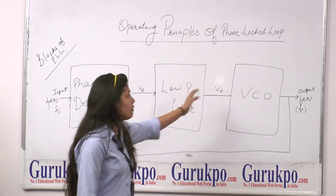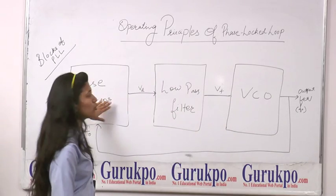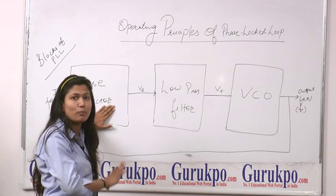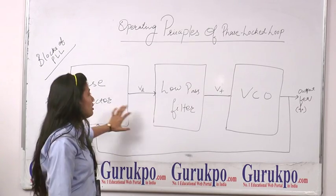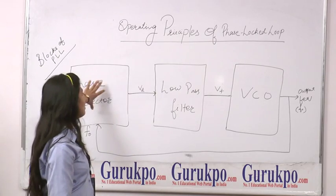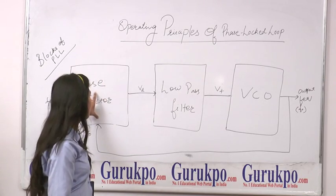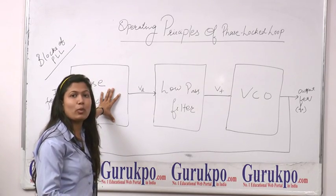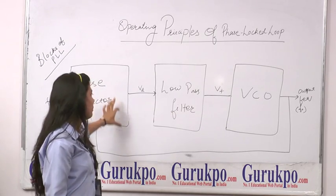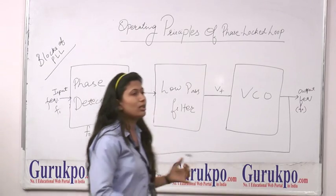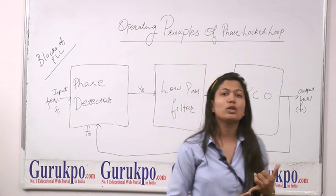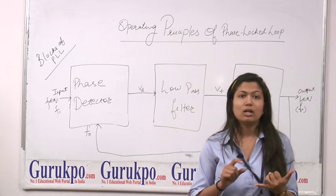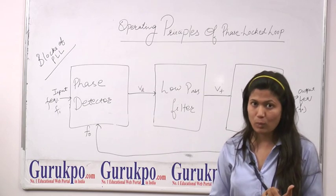Then finally, the output of the VCO is sent back to the Phase Detector. If the difference between the input frequency and output frequency is at a minimum, then through the feedback mechanism of the Phase Detector, the two frequencies become equal. And in this way, the output frequency becomes equal to the input frequency — that is, the output frequency becomes locked to the input frequency.